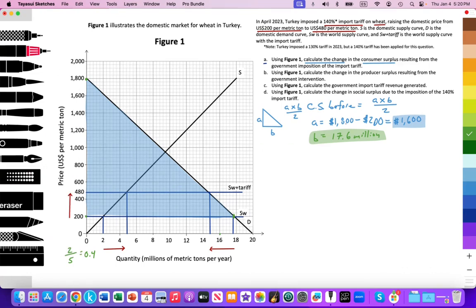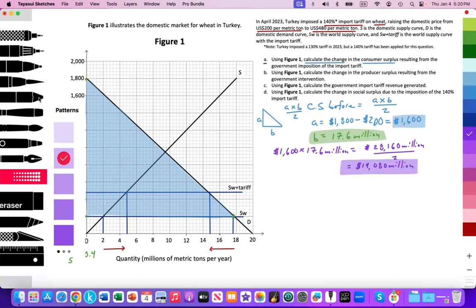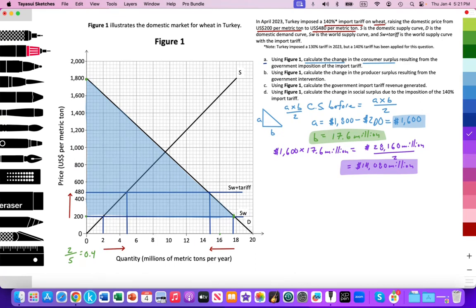Now I can figure out the surface area. We have 1,600 times 17.6 million, which equals 28,160 million. It's a triangle, so we're going to divide that by two, which works out to 14,080 million. I've calculated that initial consumer surplus.